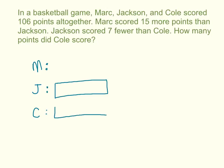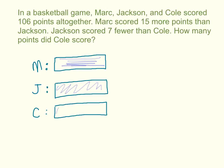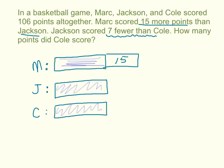We can be fairly certain that both Cole and Mark scored at least as much as Jackson. They did score extra, and we'll get to that. I just want to start with a model that shows they've all got the same base amount — in other words, 3 equal blocks. Now I can start to get to the extras. Mark scored 15 more than Jackson, so I draw an extension on Mark's bar and label it 15. Jackson scored 7 fewer than Cole, which means Cole's bar needs to go up by 7.